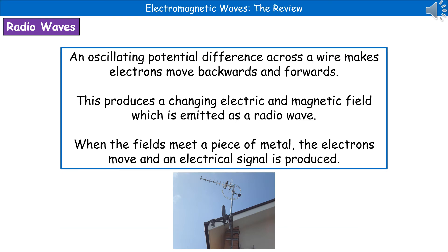On the higher tier paper, we need to know how we can actually produce and detect radio waves. If we've got a wire with an oscillating potential difference across it, then as a result, electrons are going to be moving backwards and forwards. Those moving electrons produce a changing electric and magnetic field, which will be emitted as a radio wave — because our electromagnetic wave is an oscillating magnetic and electric field. When that field traveling through the air meets a piece of metal, such as the aerial on your house, the electrons within the aerial move and produce an electric signal. That is your radio or TV signal coming down your aerial.